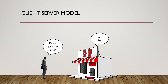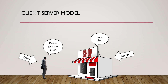Here we have a shop and a shopkeeper. The shopkeeper has a lot of resources in the shop. The customer has made a request for a pen — the customer is requesting the shopkeeper to give him a pen. The shopkeeper is responding to the customer's request by giving him a pen. So here our client is the customer and the shopkeeper is the server. They are not actually a client and server, but this analogy helps you understand the concept of the client-server model.